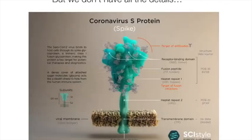But we don't have all the details. For instance, we know there is a viral membrane — we just don't have a structure for it yet, so we'll have to come up with that part. We know parts of the spike protein that have been structurally characterized, but we still don't have an experimental structure for the full protein. We know there are sugar groups added to this protein, but again there's no experimental model. There are several computational models and you could take it from there.